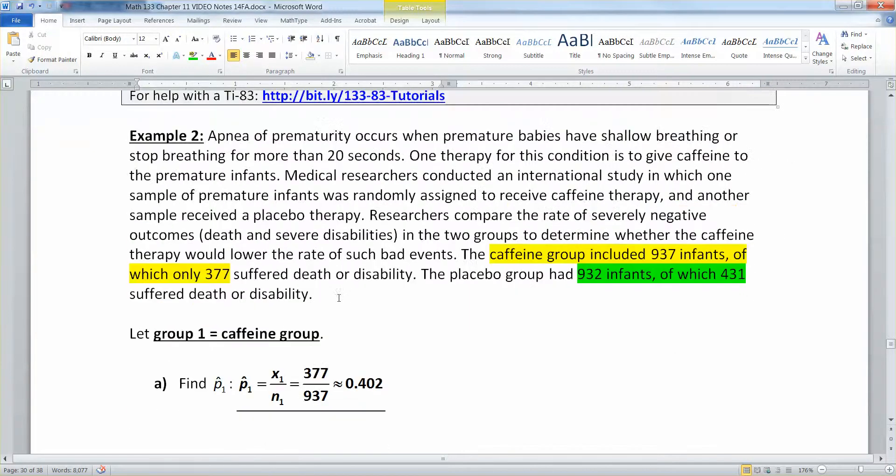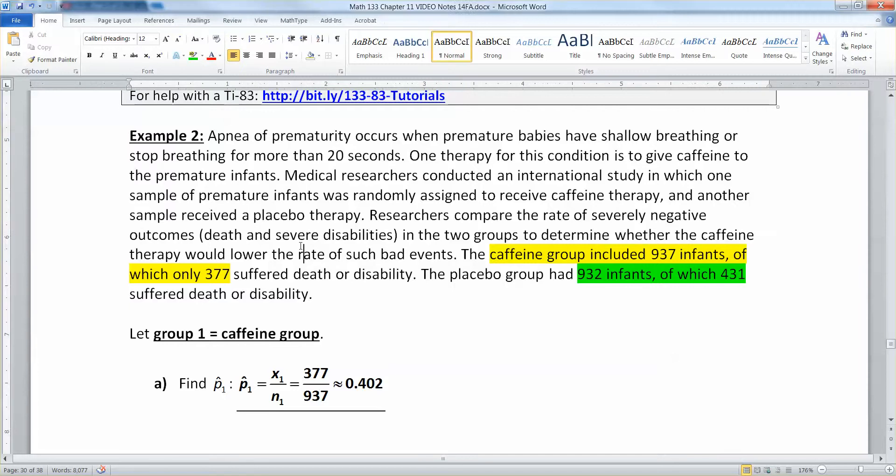And bear with me please because my computer ate my video, so I've already made this entire video and I've lost it. So the apnea of prematurity occurs when premature babies have shallow breathing or stop breathing for more than 20 seconds. One therapy for this condition is to give caffeine to the premature infants, kind of stimulate them, see if they can breathe more.